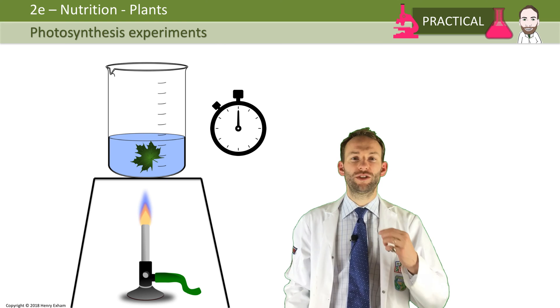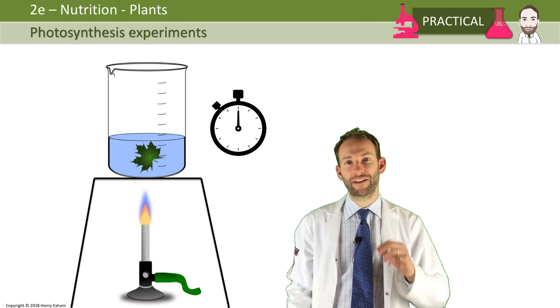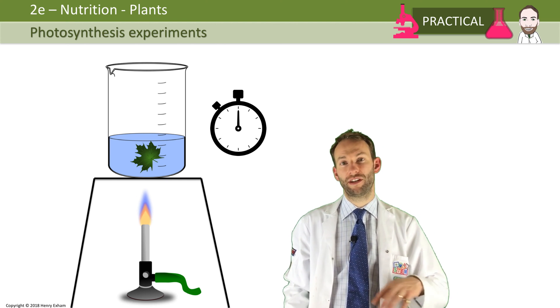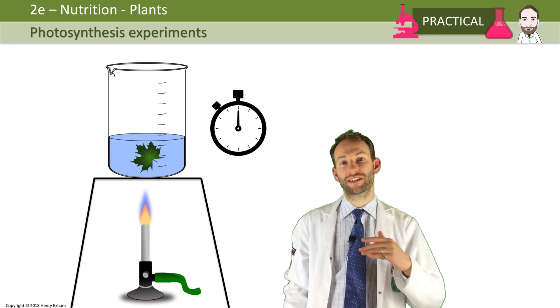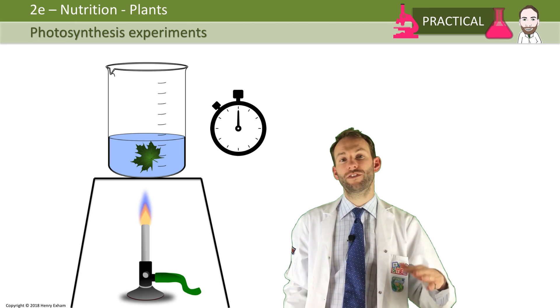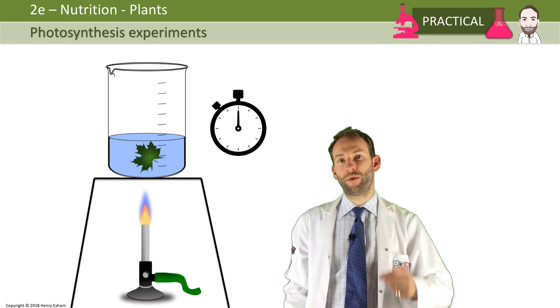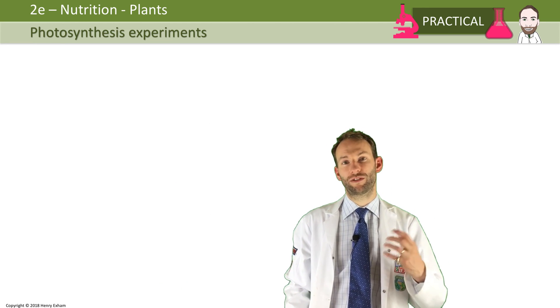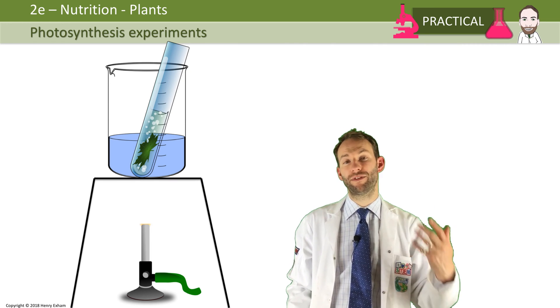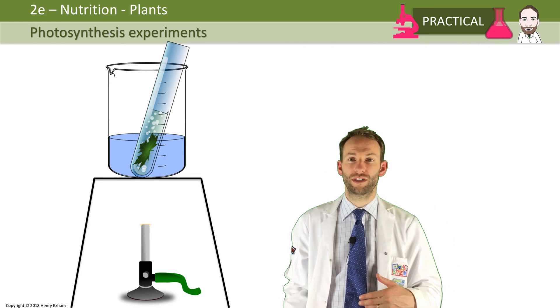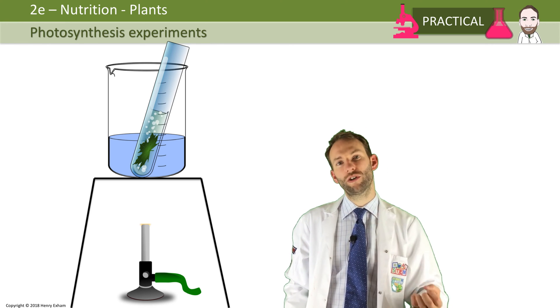Then you need to boil it in ethanol, but at this point it's very important that you switch off the Bunsen burner. There's quite often a mark available for that in the mark scheme because that's a safety issue - ethanol is very flammable. Turn off the Bunsen burner, pop a boiling tube of ethanol into the beaker which already has the hot water in, and pop the leaf into that boiling tube.